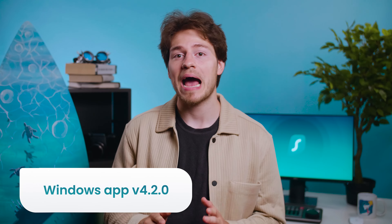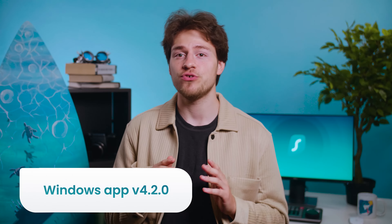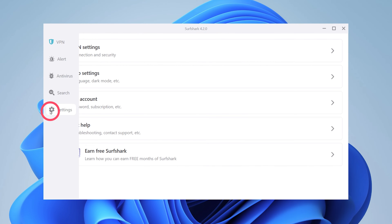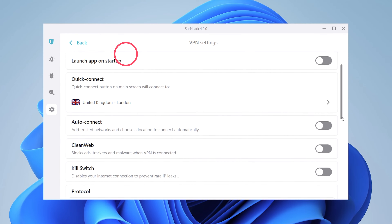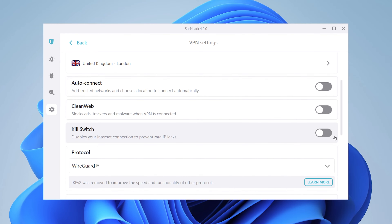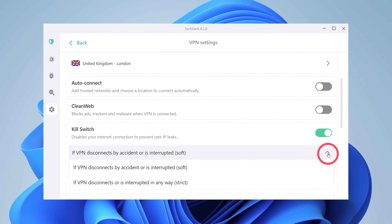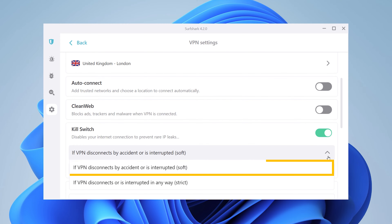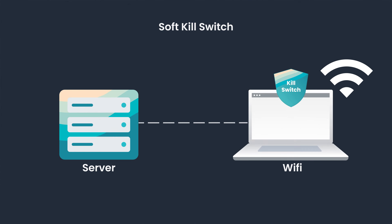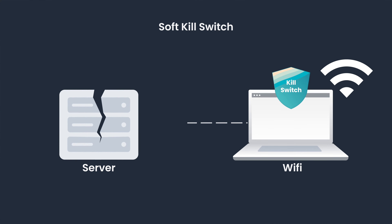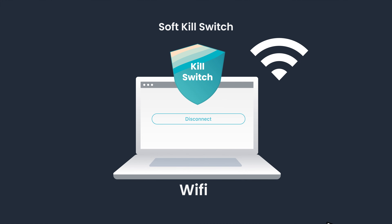Let's start with the Windows App 4.2 update. After a lot of requests from our users, our team has implemented an ability to customize the kill switch feature behavior. There are now two modes. First is the soft kill switch. When enabled, it will disable your internet connection only if your VPN accidentally drops due to a server outage. However, it will not activate if you disconnect manually.